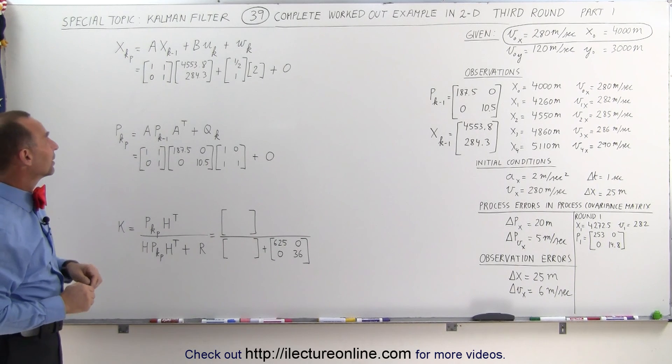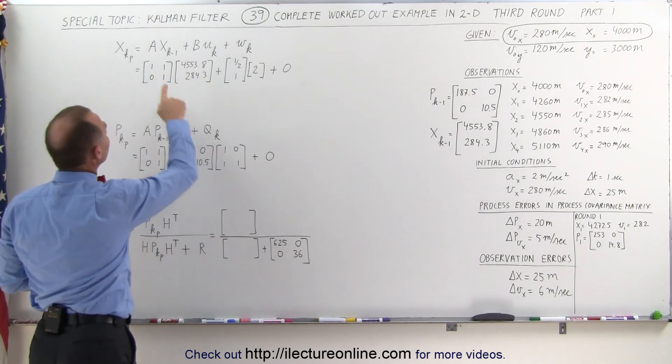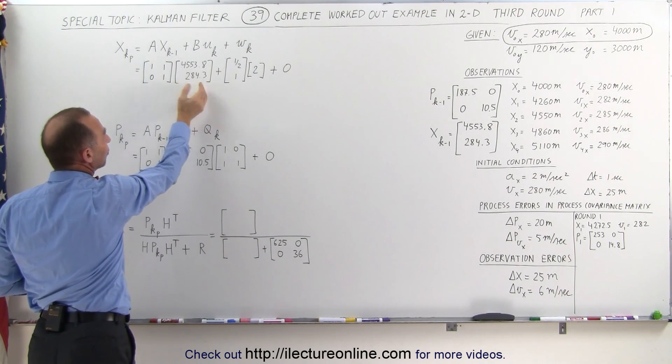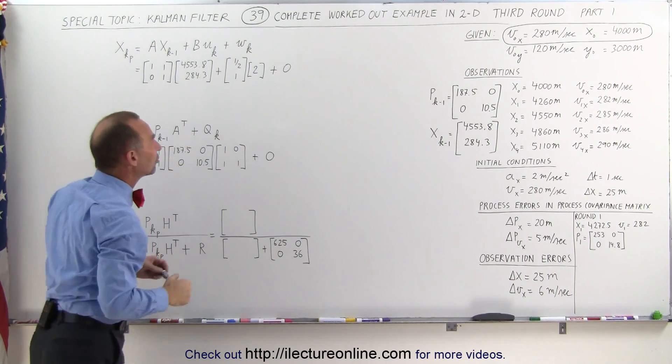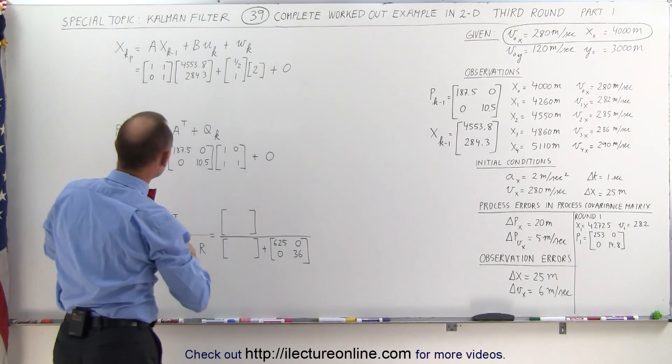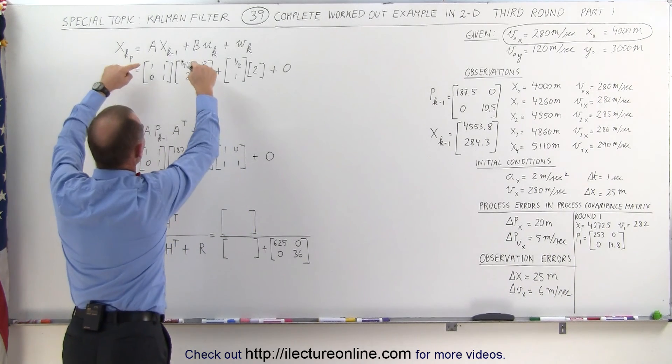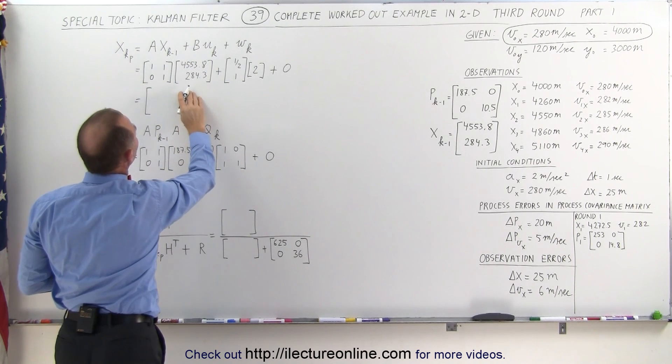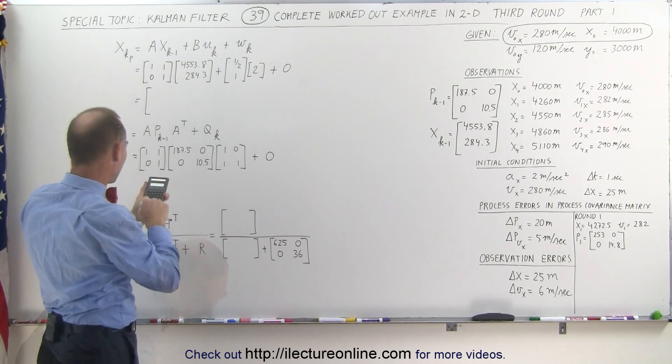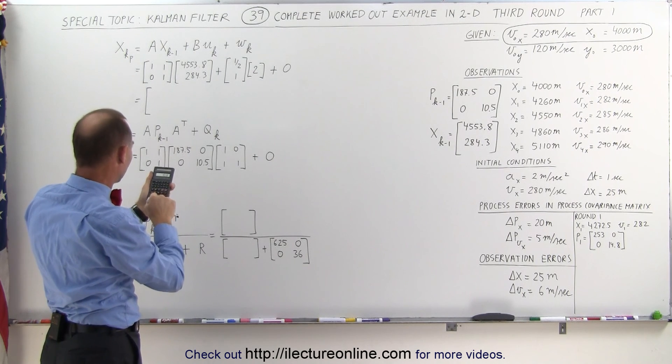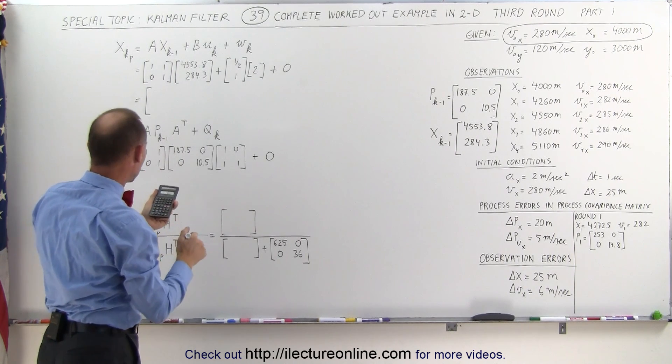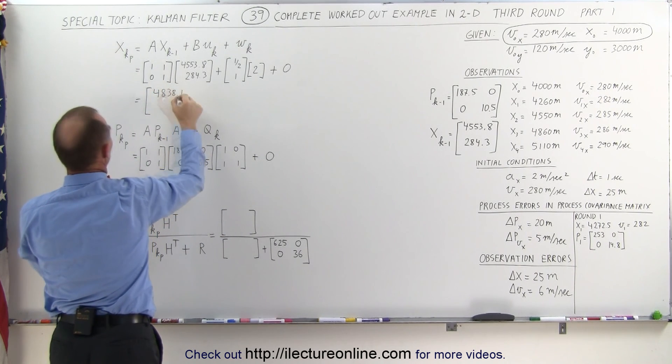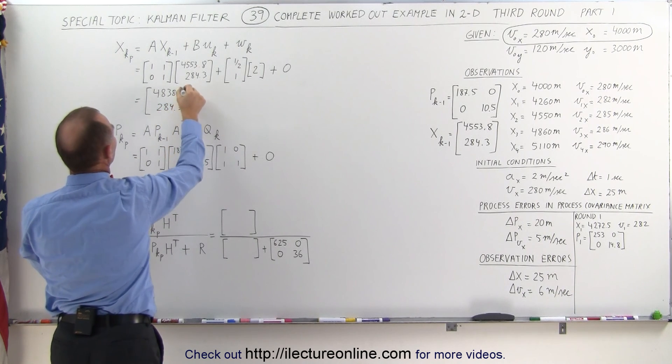Let's go ahead and do that. Let's start out with calculating the predicted state matrix. We've already put in the A matrix, the B matrix, we've put in the state matrix from the previous round, and that would still be the acceleration as we estimated, as we predicted it. Calculating this, we have to multiply this times this. This ends up being the sum of those two when we add those together. 4553.8 plus 284.3 equals 4838.1 and 284.3 for the velocity.